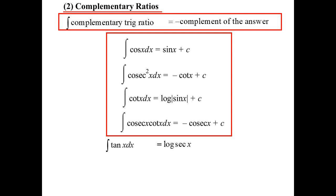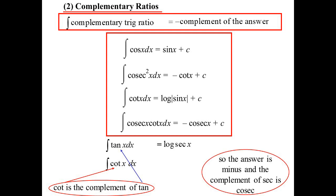So just to highlight that again, there's tan. We know if I integrate tan, I get the log of sec. That was one of the answers. Well cot is the complement of tan. So my answer will be minus, and the complement of sec is cosec, so we get minus the log of cosec.